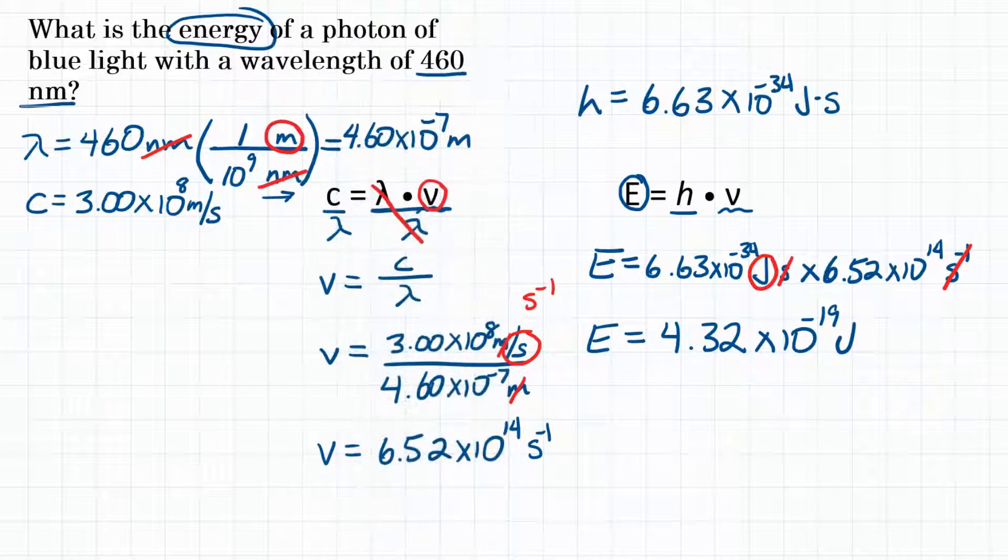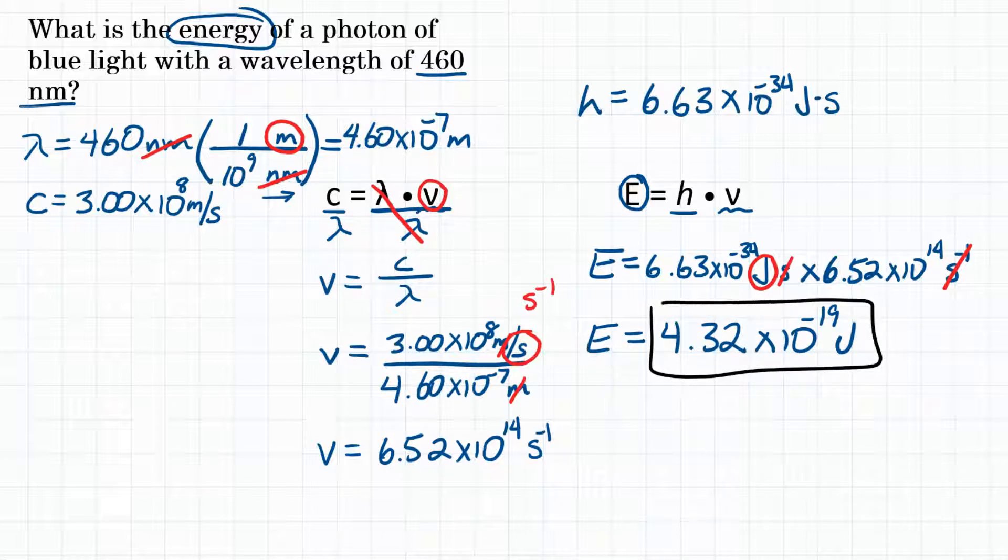So final answer. What is the energy of a photon with a wavelength of 460 nanometers? That would be 4.32 times 10 to the negative 19th joules.